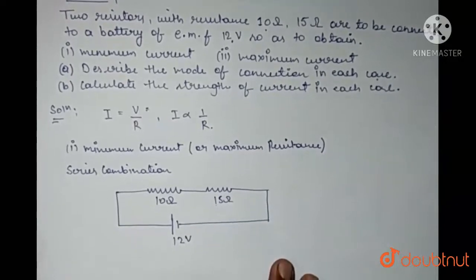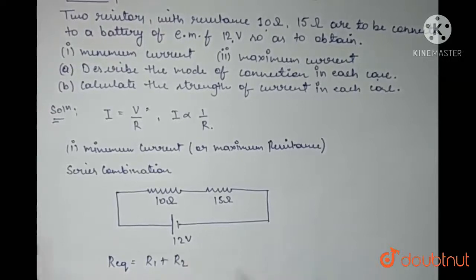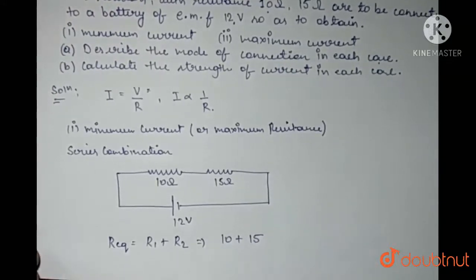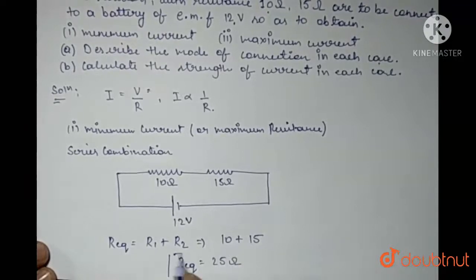So, what will be the equivalent resistance here? R equivalent is R1 plus R2 in the series case, which is 10 plus 15. So, the R equivalent would be 25 Ohm.